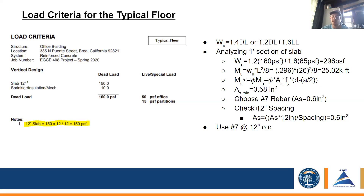We then checked the 12-inch spacing to confirm it was adequate. We took the area of steel times 12 inches and divided by the spacing, getting 0.60 in². This gave us a phi-Mn greater than 25 kip-feet, so it checked out. We chose to use number seven rebars at 12 inches on center.